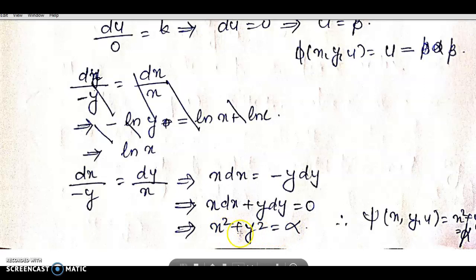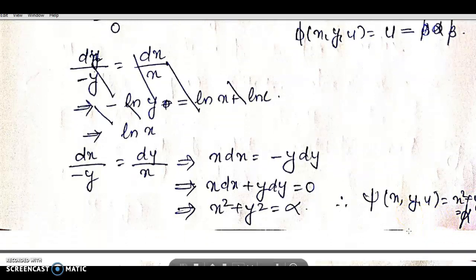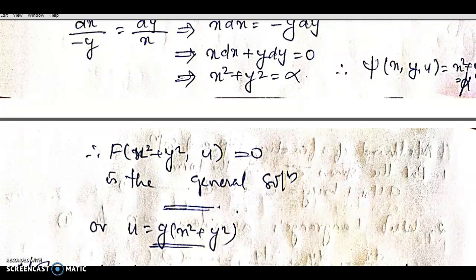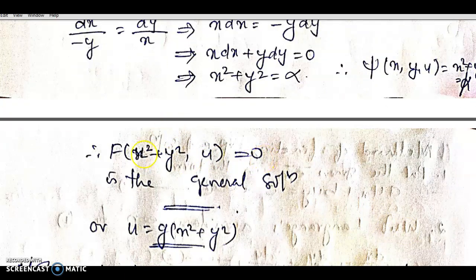From dx/(-y) = dy/x, we get x·dx + y·dy = 0, which integrates to x² + y² = α. Therefore ψ(x,y,u) = x² + y² = α. The general solution is f(x² + y², u) = 0.